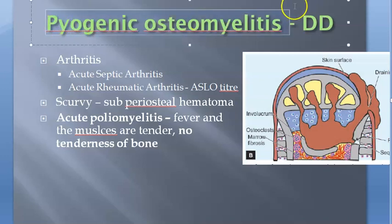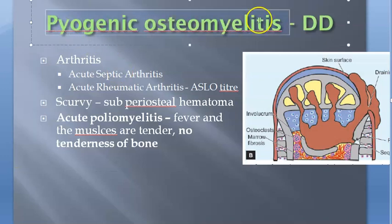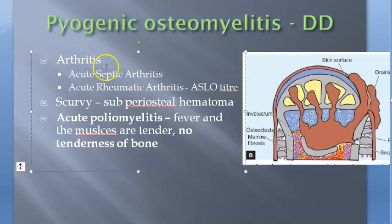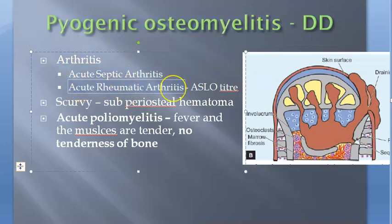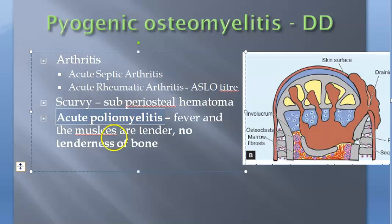In this video, let us look at the differential diagnosis for pyogenic osteomyelitis. It can be any joint issue — it could be arthritis like acute septic arthritis or acute rheumatic arthritis. It could be scurvy; in scurvy you also have subperiosteal conditions, such as a subperiosteal hematoma.